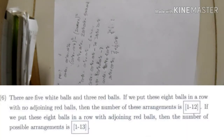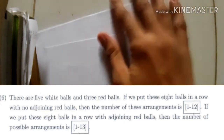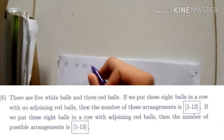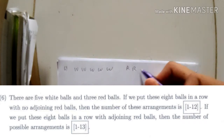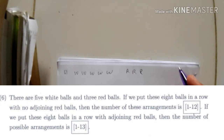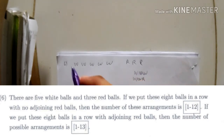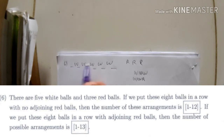Now let's continue to number six. Number six is a question about probability/arrangements. There are five white balls (W) and three red balls (R). If we put these eight balls in a row with no adjoining red balls, how many arrangements are there? 'No adjoining red balls' means red balls cannot be adjacent to each other.